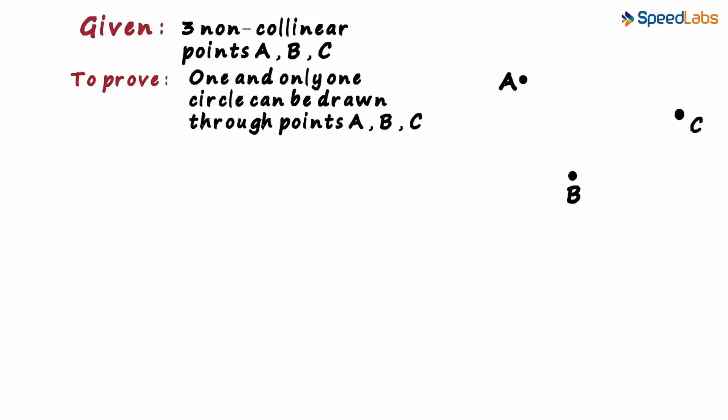Before we move on to the proof, let's analyze how do we aim to prove it. How can we prove that only one circle passes through points A, B and C? Let me give you a hint.